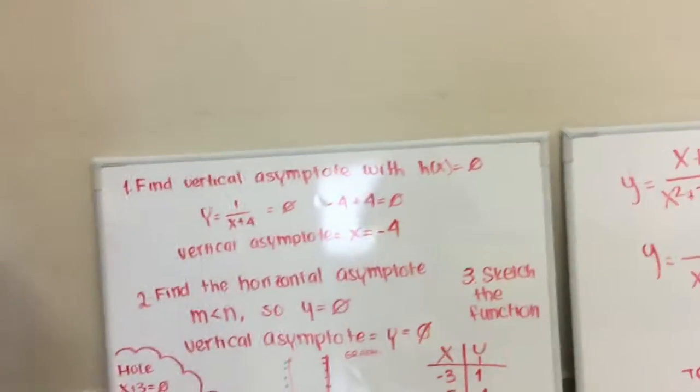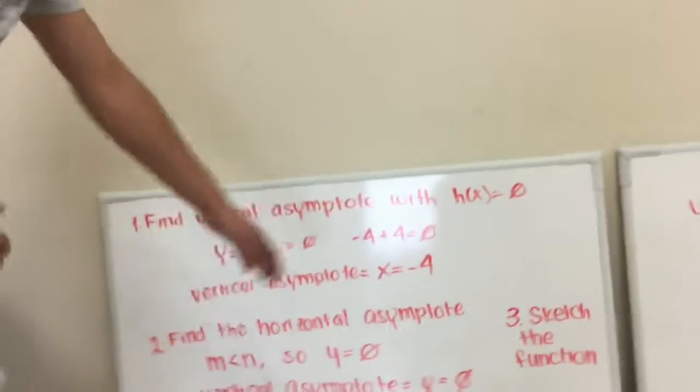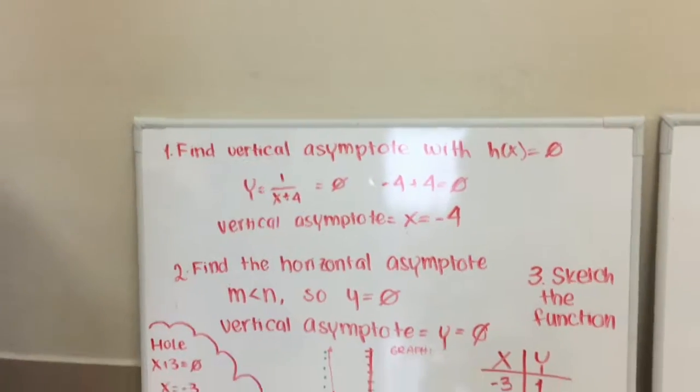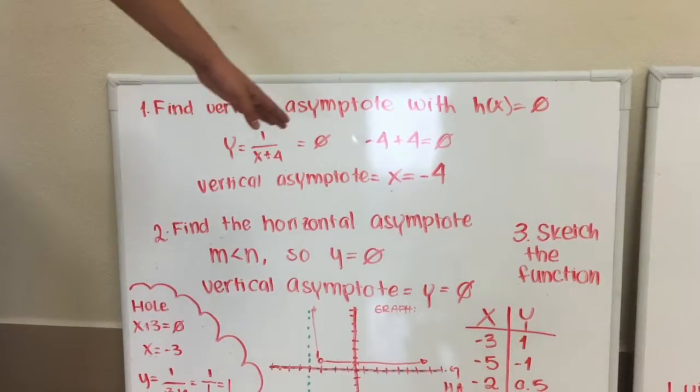To find vertical asymptote, you need to make the denominator equal to 0. In this case, the vertical asymptote will be x equals minus 4.